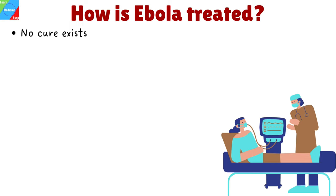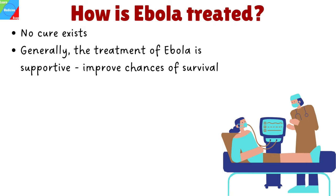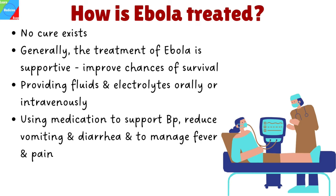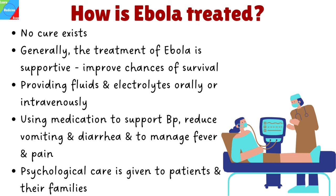How is Ebola treated? No cure exists, but a promising new vaccine and several still-experimental treatments are bringing hope in the battle against this deadly disease. Generally, the treatment of Ebola is supportive, which can significantly improve chances of survival. This includes providing fluids and electrolytes orally or intravenously, since patients lose so much fluid, keeping them hydrated is crucial to avoiding shock. Treatment also involves using medication to support blood pressure, reduce vomiting and diarrhea, and to manage fever and pain. Additionally, psychological care is given to patients and their families to help them deal with this serious illness, sometimes while also dealing with the illness or loss of other family members due to Ebola.